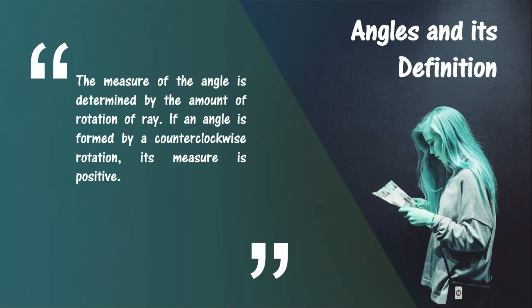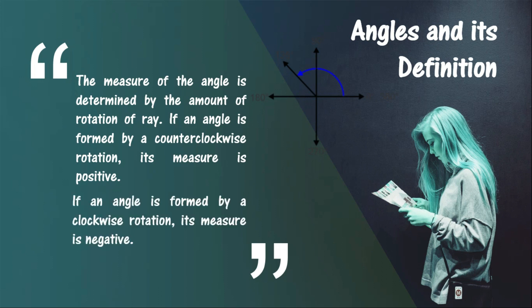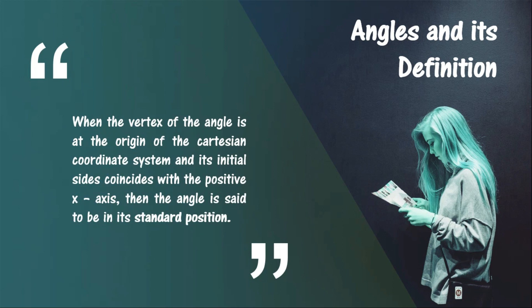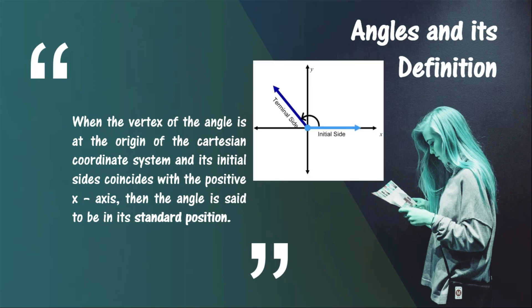If an angle is formed by a counterclockwise rotation, then the measure of the angle is positive. But if an angle is formed by a clockwise rotation, its measure is negative. When the vertex of the angle is at the origin of the Cartesian coordinate system and its initial side coincides with the positive x-axis, then the angle is said to be in its standard position, meaning the initial side lies on the positive x-axis.